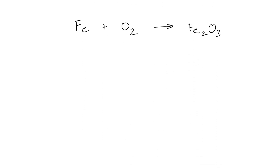Let's try one last problem: Fe plus O₂ goes to Fe₂O₃. We can see that we have one iron on the left and two irons on the right. So we're going to put a 2 in front of the iron. Then we have two oxygens on the left and three oxygens on the right, so we're going to need a lowest common multiple for this one. What's the lowest common multiple of three and two? Six.